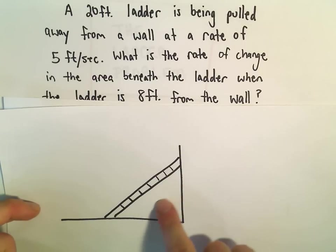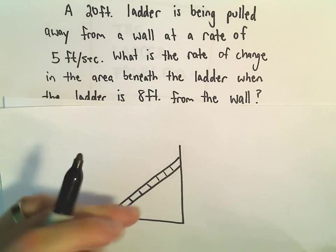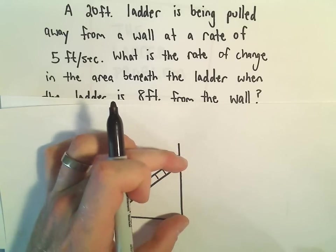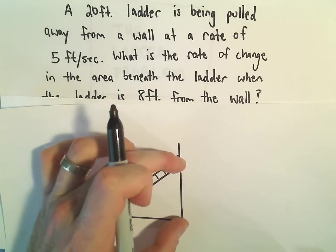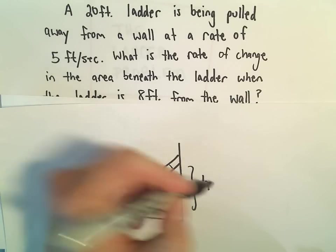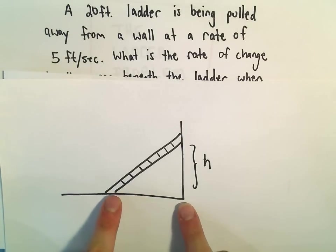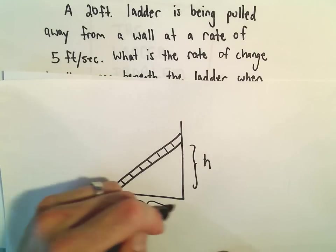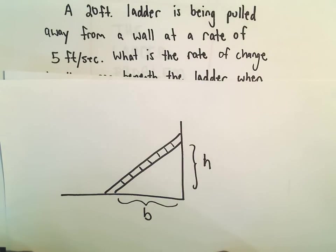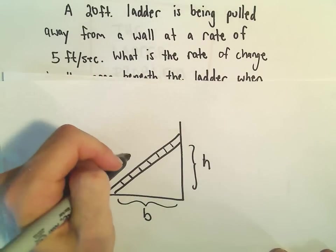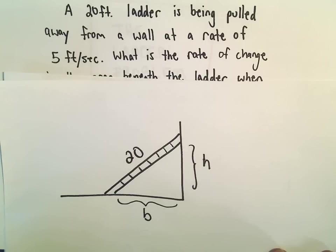We're eventually interested in this area, but before we do that I want to think about which lengths vary with respect to time so that I have to give them a variable. The height that the ladder is up the wall, that's going to vary with time, so I'm going to label that with a variable and I'll call it h for height. Likewise, the distance at the base of the ladder away from the wall, as time progresses since it slides out, that's also going to vary so I'm going to label that with another variable. I'll call it b. Notice though that the length of the ladder, that's not going to change, so don't give that a variable. We're just going to label that with 20 because it's going to stay constant.